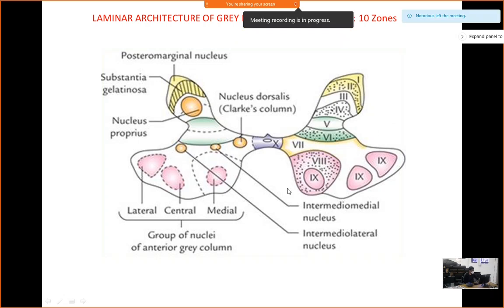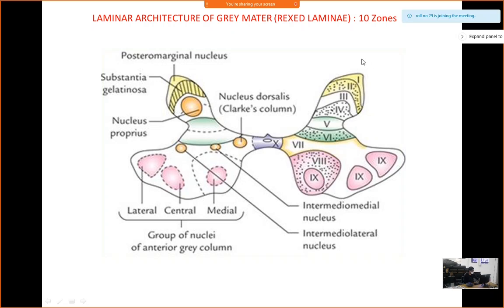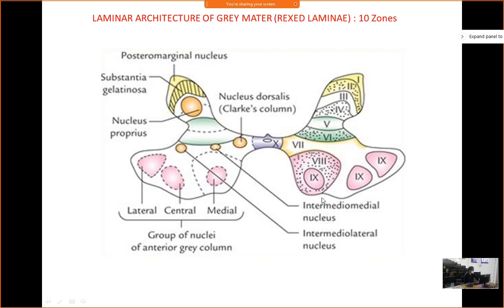For the laminar architecture — this is important mainly for research work, such as when cutting the dorsal root ganglion and observing nerve degeneration. These areas are divided into numbered zones 1 through 10, known as the laminar architecture of grey matter, also called Rexed laminae. It's good if you can remember this, but it is not mandatory.